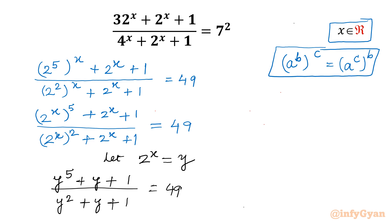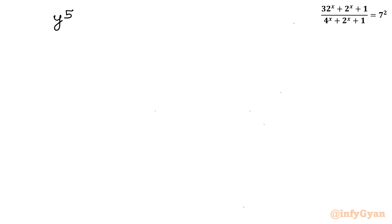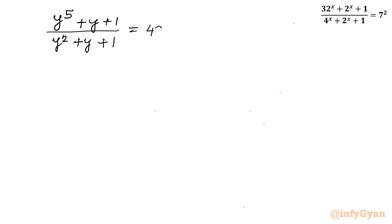Now we have to find out the factors of the numerator expression: y^5 + y + 1, divided by y^2 + y + 1, equal to 49.